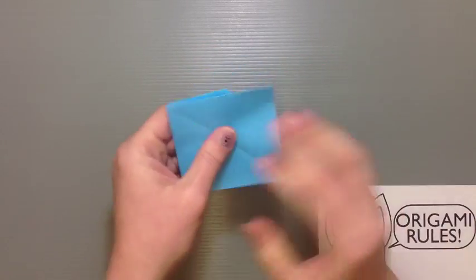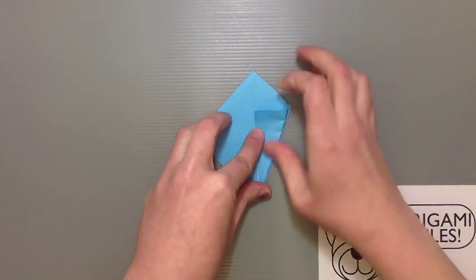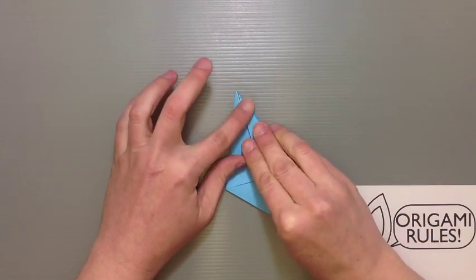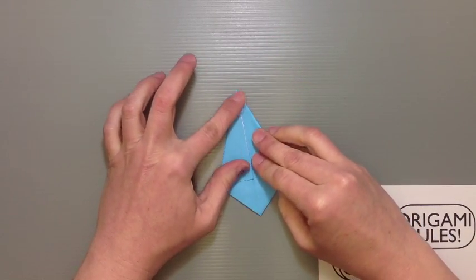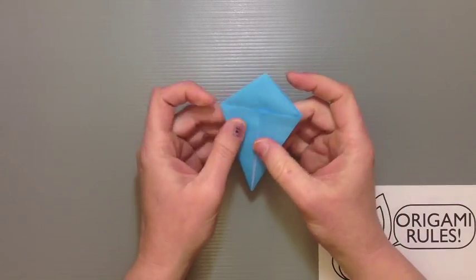Go ahead and flip everything over and do the same thing on this side too. I know my center crease is a little faint. If you're having a hard time seeing it, you can fold over the flaps again too to get it to show up a little clearer. So get both of those flaps folded over.